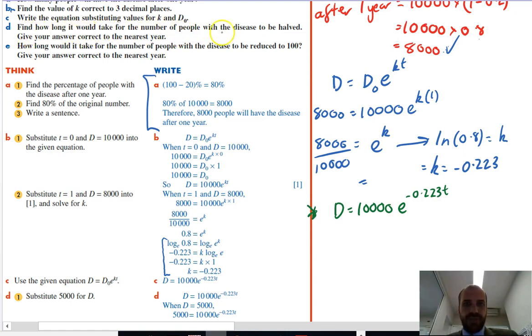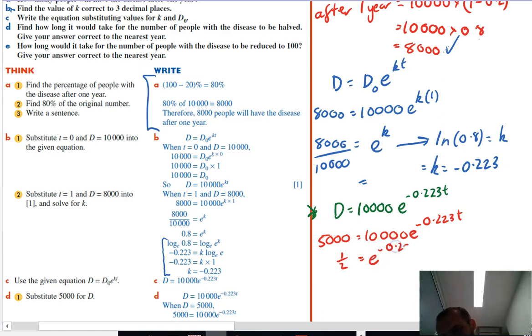Find how long it would take for the number of people with the disease to be halved. All right. So if that were the case, we started with 10,000, so we're going to move over to 5,000. So 5,000 equals 10,000 e to the negative 0.223 t. Divide 5,000 by 10,000, and you'll get one half e to the negative 0.223 t. I'm just skipping the step where I do 5,000 divided by 10,000, because you should be able to see pretty quickly that that's one half.